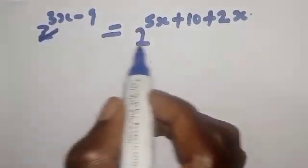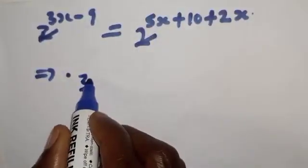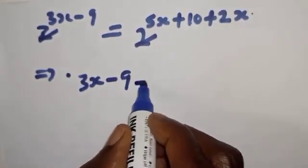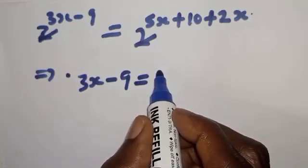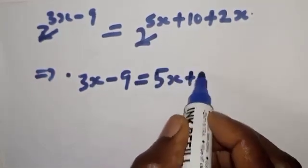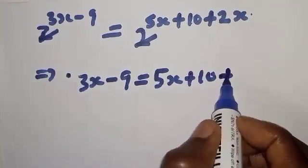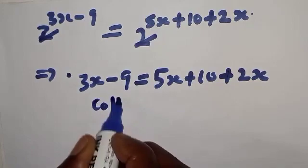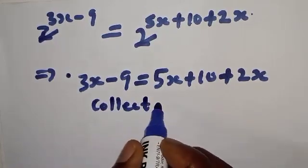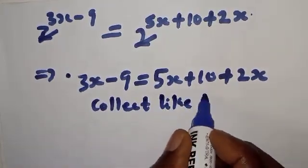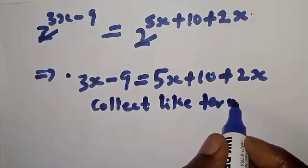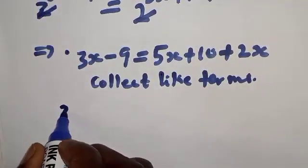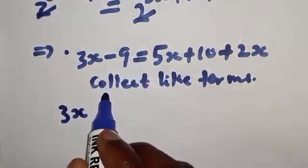So we can express the right side as 2 raised to power 5x plus 10 plus 2x. Since they have the same base, the bases cancel, and we have 3x minus 9 equal to 5x plus 10 plus 2x.